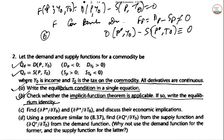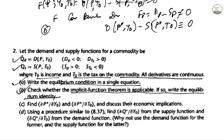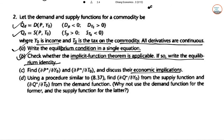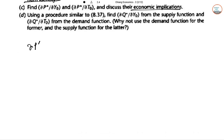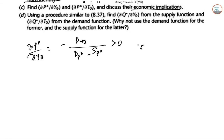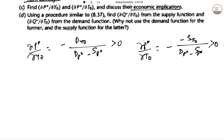Part C: find ∂P*/∂Y₀ and ∂P*/∂T₀ and discuss their economic implications. By the implicit function rule, ∂P*/∂Y₀ = −D_{Y₀} / (D_{P*} − S_{P*}), which is greater than zero. And ∂P*/∂T₀ = −S_{T₀} / (D_{P*} − S_{P*}), which is also greater than zero.